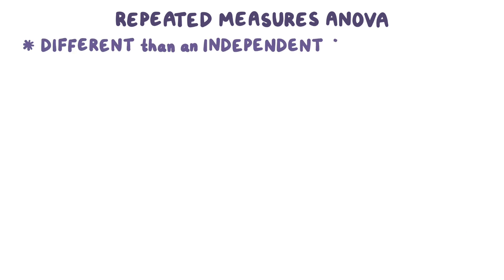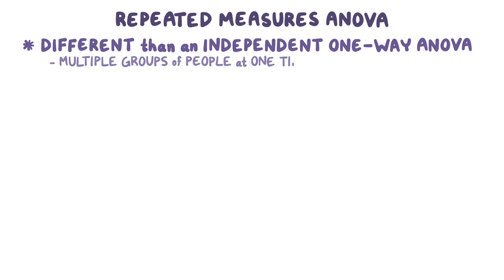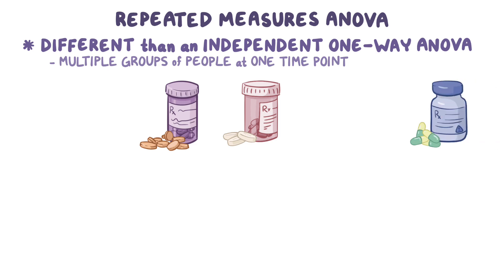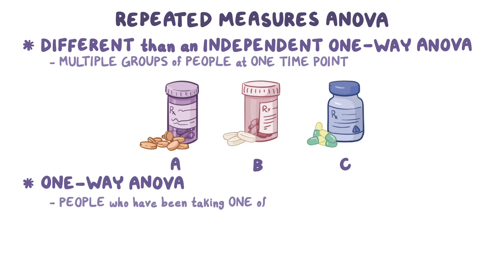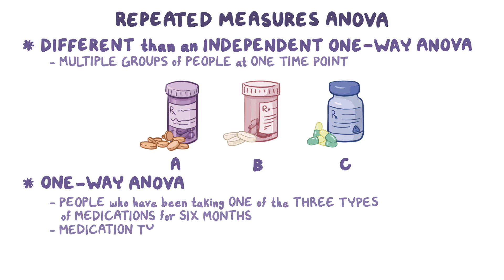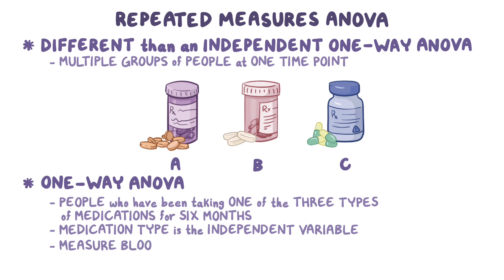The repeated measures ANOVA test is different than an independent one-way ANOVA test, which looks at multiple groups of people at one time point. For example, a one-way ANOVA test would compare the systolic blood pressure measurements for people who have been taking one of three medications — A, B, and C — for six months. In this example, medication type is the independent variable instead of time, because you measure the blood pressure of every person in the study at the same time.